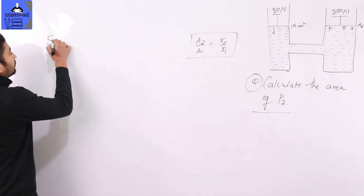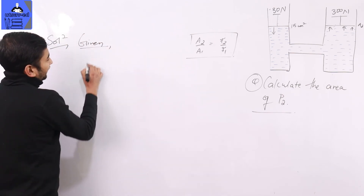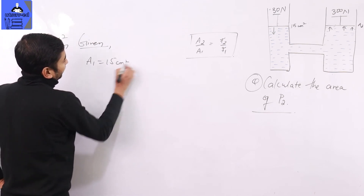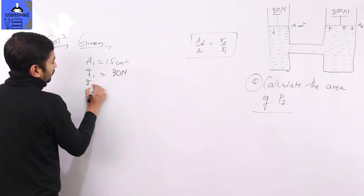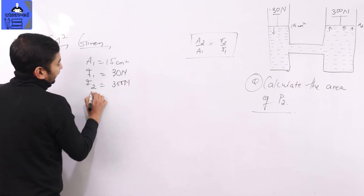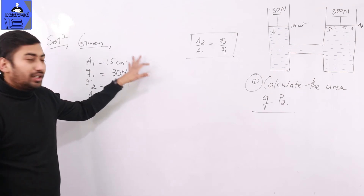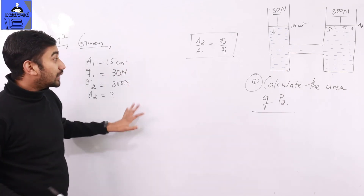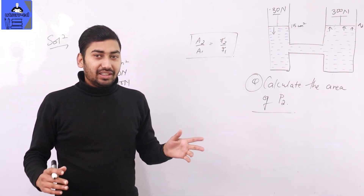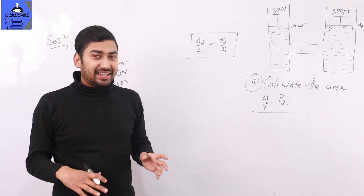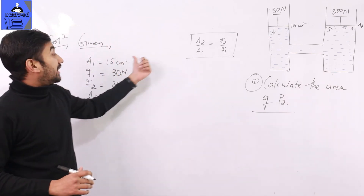So let's start the solution. The given values are: area A1 is 15 cm², force F1 is 30 N, and force F2 is 300 N. We need to find area A2. You can convert to SI units to get the correct answer.